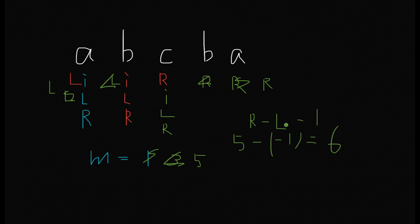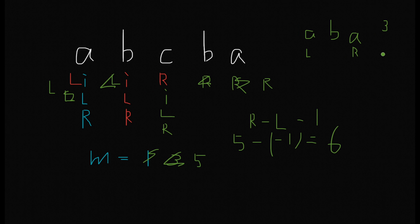You might think we should subtract minus two since we have two pointers expanding simultaneously. But index numbers start from zero, not one, so right minus left already includes a minus one built in. For example, with 'aba', the right index is two and left is zero: two minus zero equals two, but the actual length is three. So right minus left minus one works correctly.